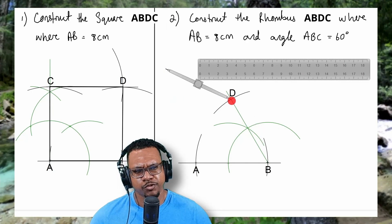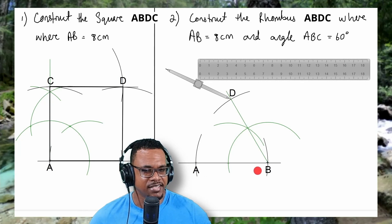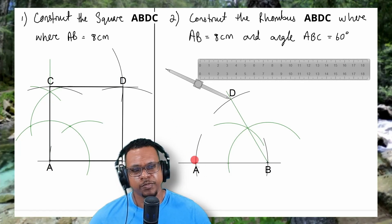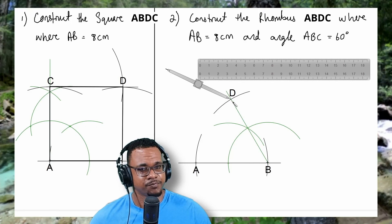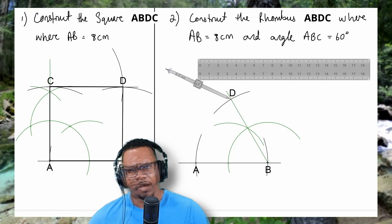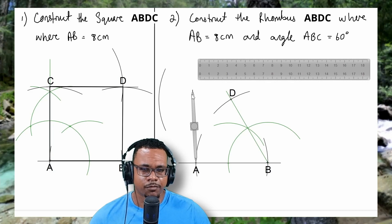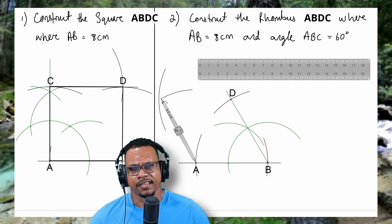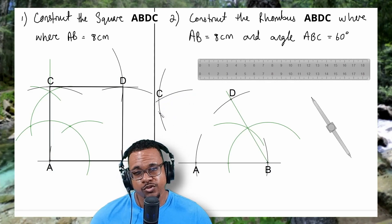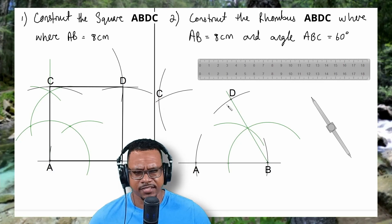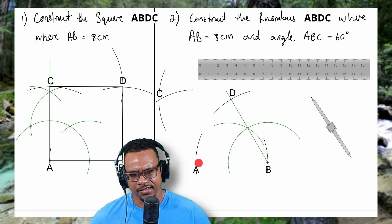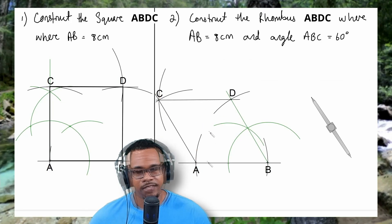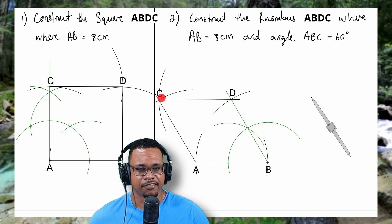Now the side DC will be parallel to AB, and the side AC will be parallel to BD. With the compass still open to 8cm, I'll place the point at D and make an arc, then place the compass point at A and make another arc. Where those two arcs meet will be called point C. So I'll take my ruler and connect points D to C, and C to A. There you have it — your rhombus ABDC. The last step is to darken the final outline.